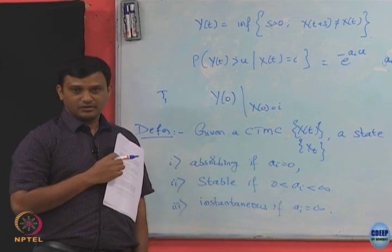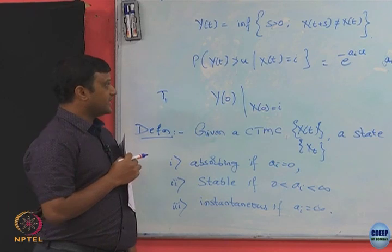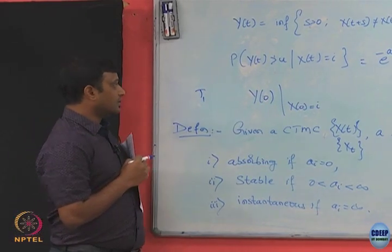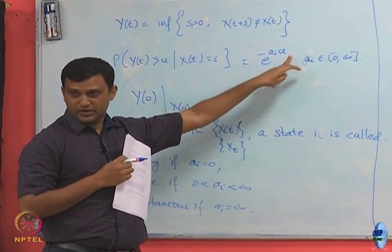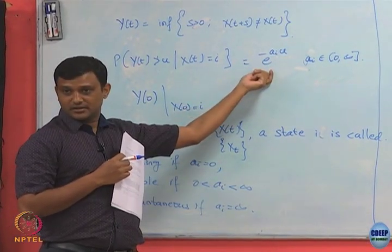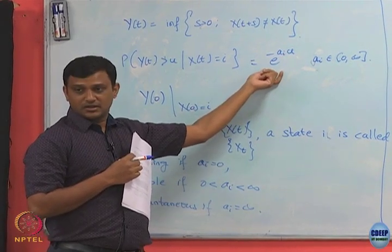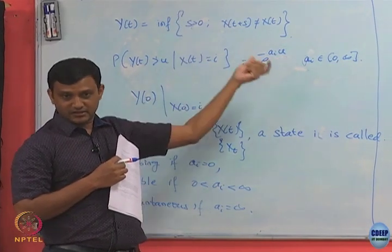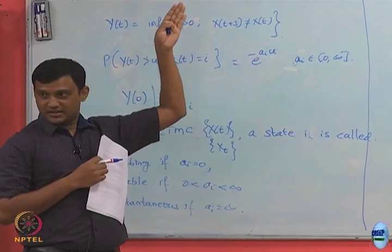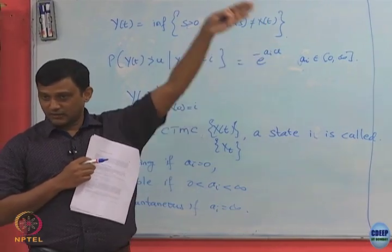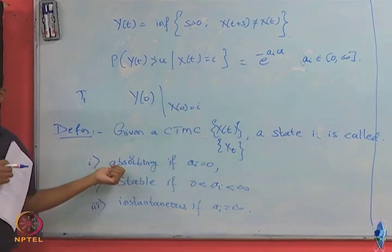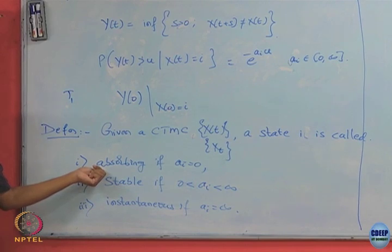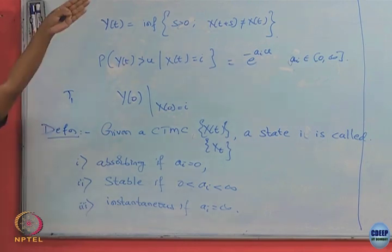When ai equals 0, for whatever value of u you take, the probability that yt is greater than u equals 1. That is, however large u is, the chain continues to stay in that state — it is never leaving. This is why we call it absorbing: once the CTMC hits that state, it is stuck there and never leaving.